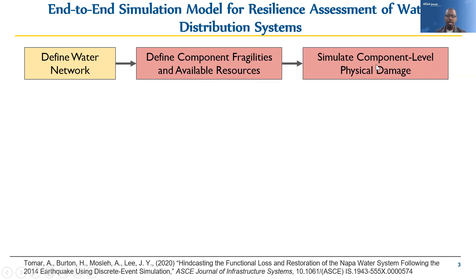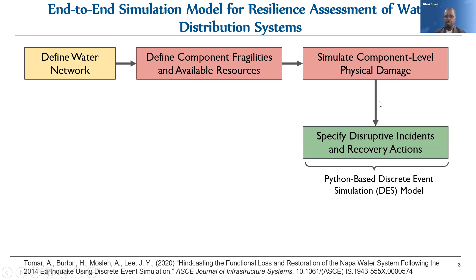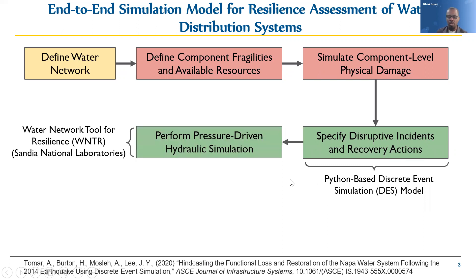Simulating component-level physical damage is one of the main steps and also one of the more established steps within the natural hazards modeling community. A key transition here is understanding the relationship between physical damage to components and the disruption that happens because of that damage — not only the disruptions that happen, but also the recovery actions that need to be implemented to ameliorate those disruptions. To do that, we're utilizing a technique called discrete event simulation modeling.